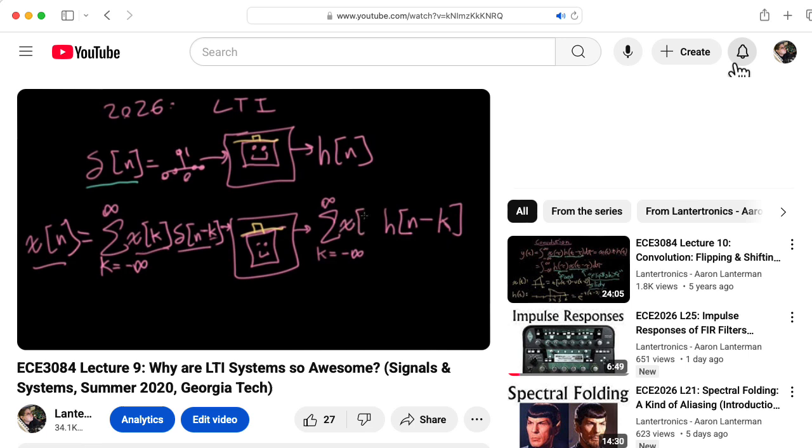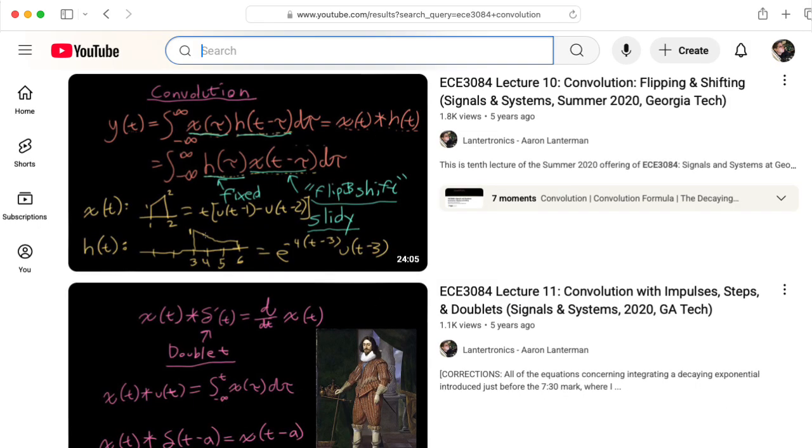Before we close out, I would like to invite you to check out the first 12 minutes of my lecture for EC 3084 titled Why Are LTI Systems So Awesome? 3084 is about continuous time signals and systems. But in this lecture, I review discrete time convolution to set the stage. There is a concept of convolution for continuous time signals that involves integrals instead of sums, but we'll save that for EC 3084.